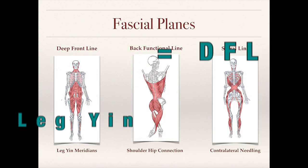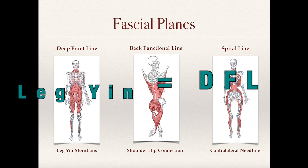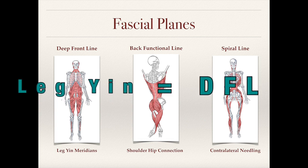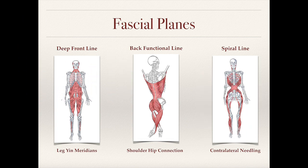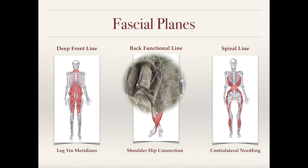This next image shows how the leg yin meridians are on the deep front line. In the center image, we have the back functional line, which explains a lot about the shoulder-hip connection. The image on the right shows the spiral line, which can teach us some things about contralateral needling.